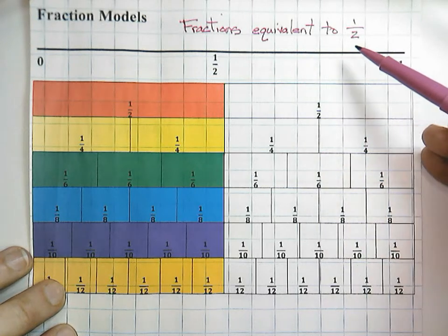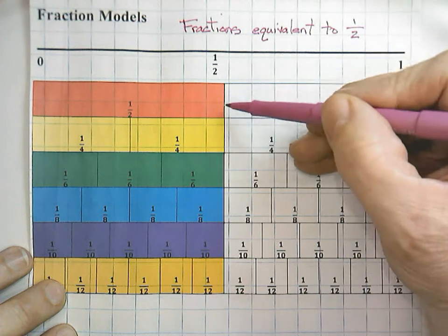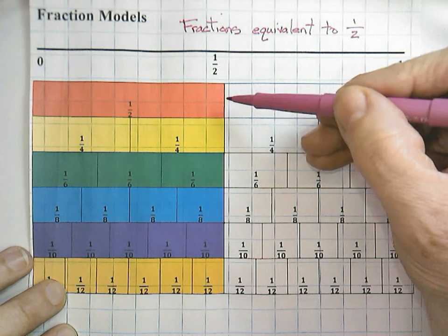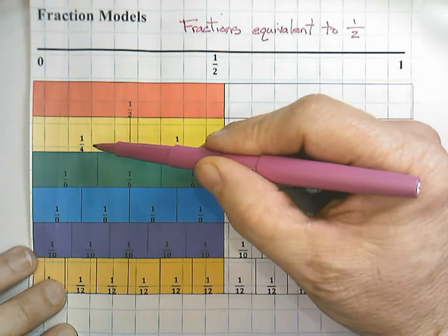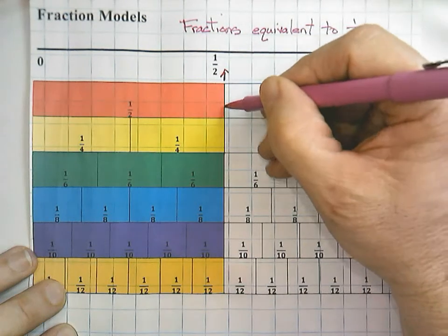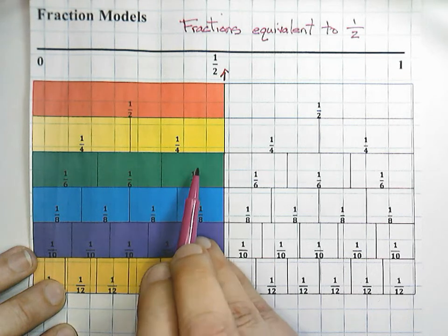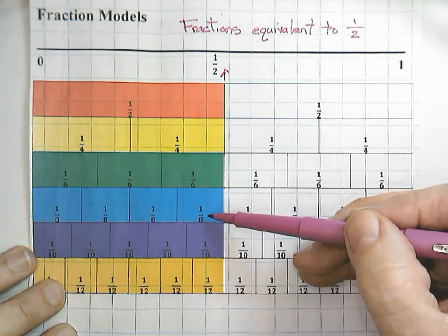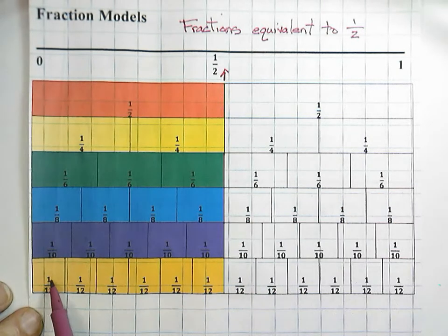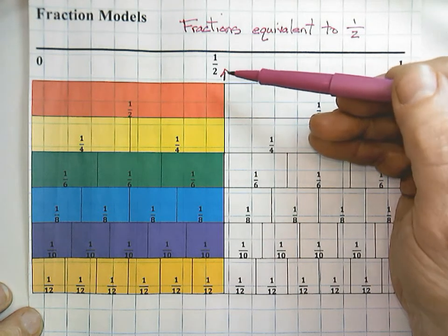We can model fractions that are equivalent to one-half just to prove it. Here's our half, and you can see it aligns to our number line. Here we have fourths — one-fourth and two-fourths — and you'll notice that two-fourths is equivalent to one-half. Similarly, three-sixths, four-eighths, five-tenths, and six-twelfths are all equivalent to one-half, as you can see in the fraction bar models.